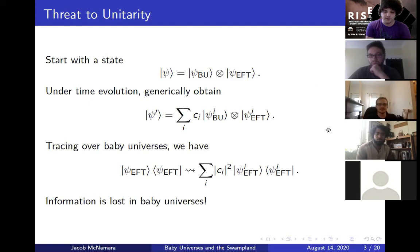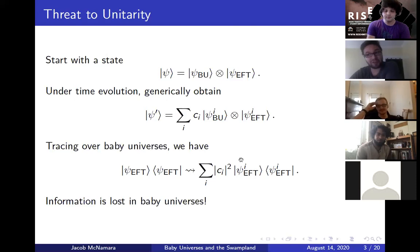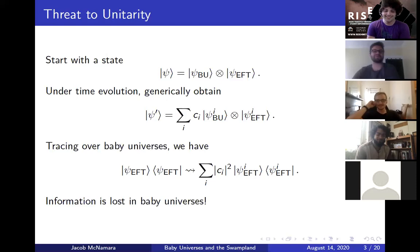The key point is that there's more than one element in that sum. When you trace over this, you get a mixed state. Whereas if there's only one element in that sum, even when you trace over it, you still get a pure state. Exactly right.